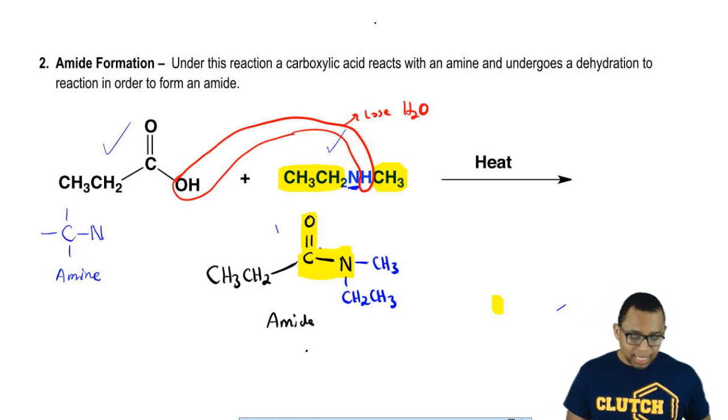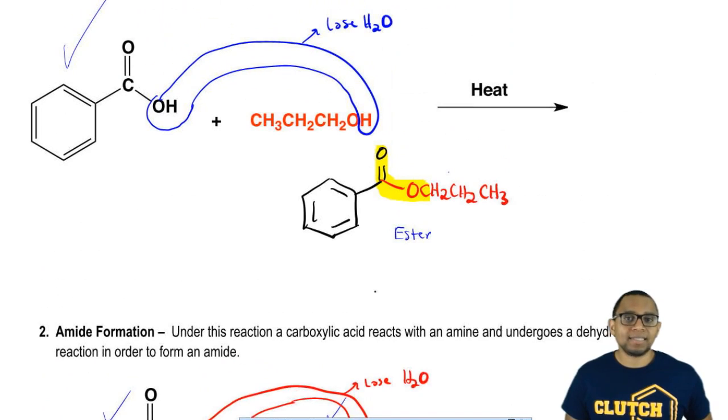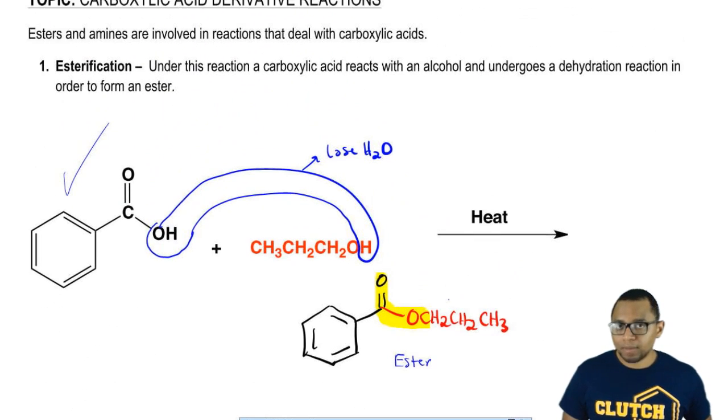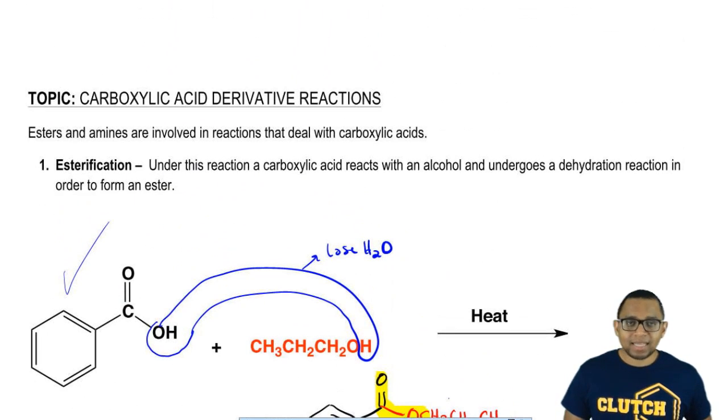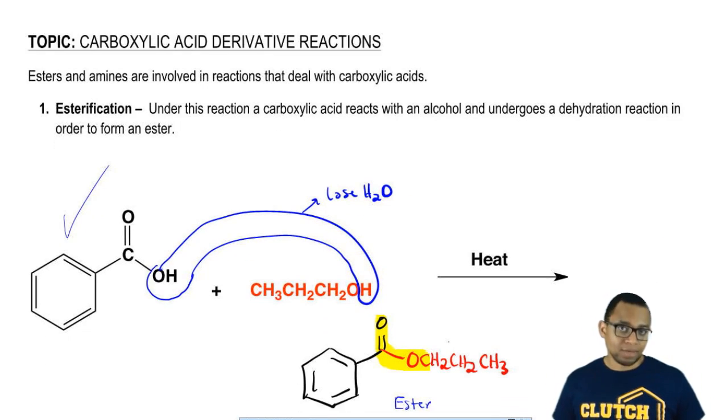These are the reactions and we're going to say here that an amide and an ester, since they come from carboxylic acids, they are derivatives of carboxylic acids. That just means that they have come from carboxylic acid in some way with the reaction of another compound. These are the major reactions that you need to know in order to make an ester and in order to make an amide.